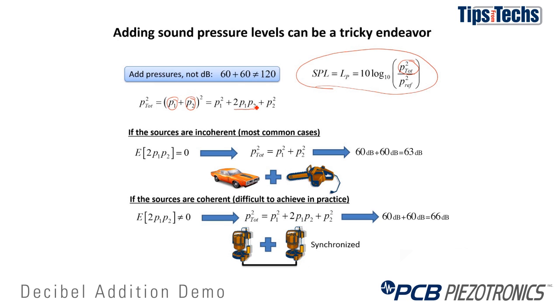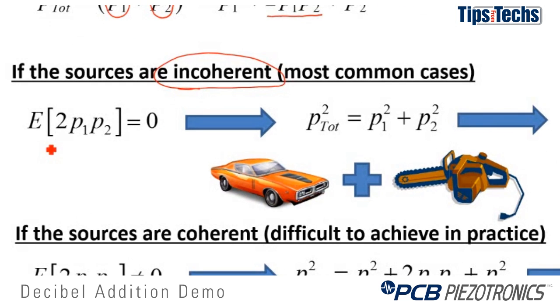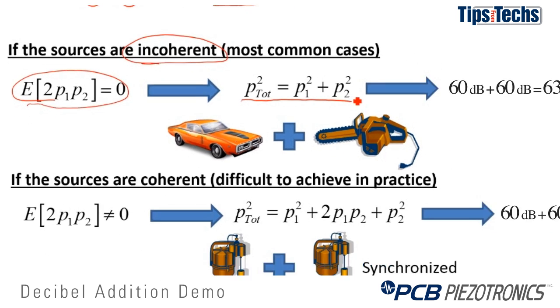Most commonly, probably over 90% of the time, we'll use incoherent source addition. That means that the sources have no consistent phase relationship with each other. In this example we've got sound from an automobile and sound from a chainsaw. The expected value of that cross term is going to be zero, because there's no relationship between those two sources. So the total pressure squared is just P1 squared plus P2 squared.